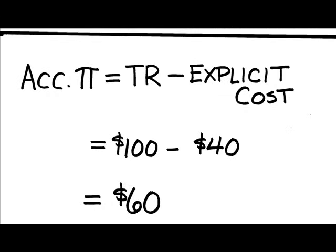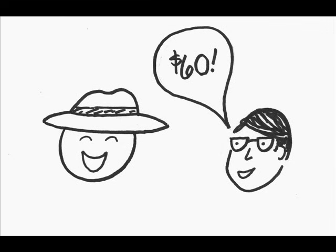What's the farmer's accounting profit, then? Accounting profit is the total revenue minus the explicit cost. So in this case, you have $60 of profit. Pretty good, right? The farmer's happy when his accountant tells him that he's earning $60 of profit.